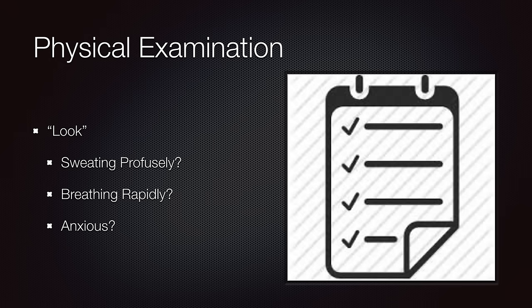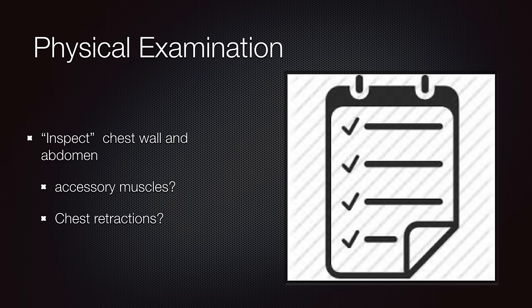The physical examination is important after doing a history. You want to look at the patient and get a general understanding of what their appearance is. Are they sweating profusely, meaning diaphoretic? Are they breathing rapidly, or tachypneic? Are they anxious? The physical examination will also include inspecting the chest wall — are they using accessory muscles for breathing? Are they having chest retractions?